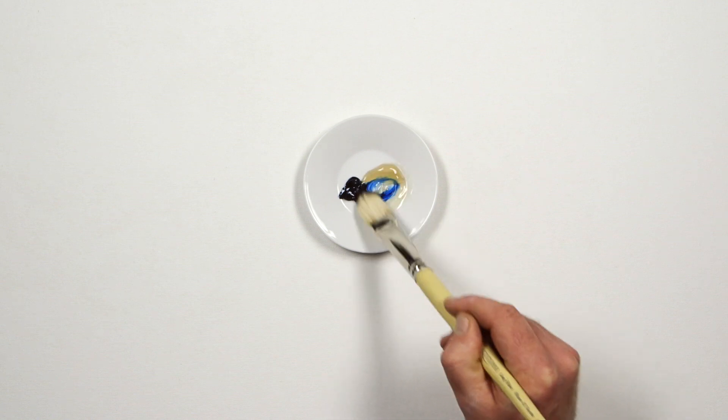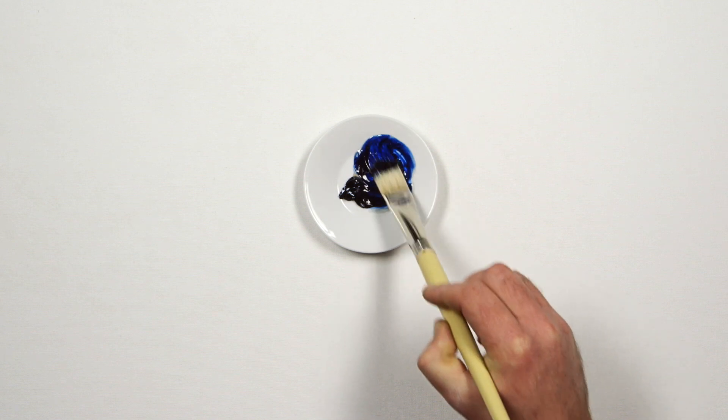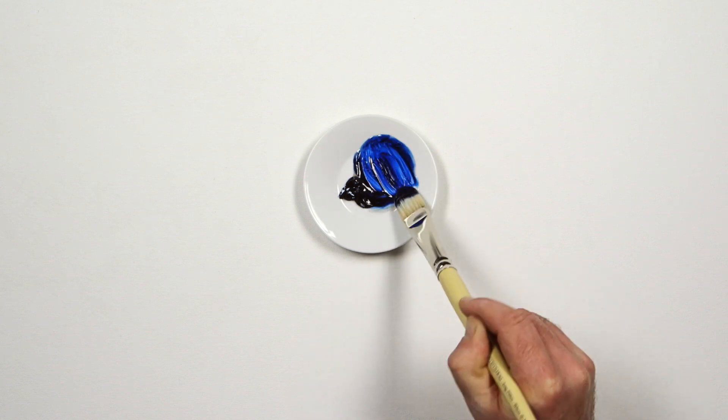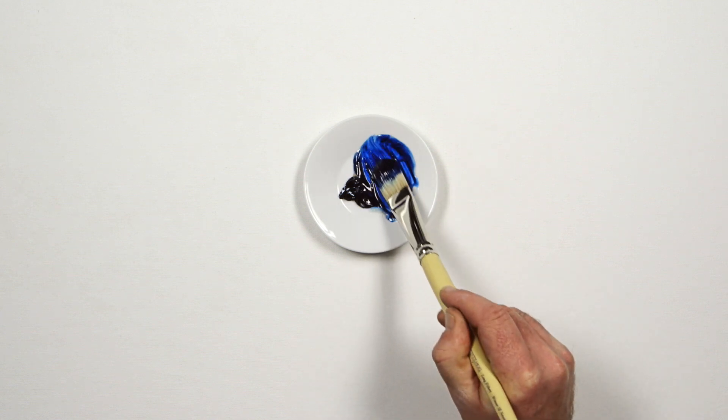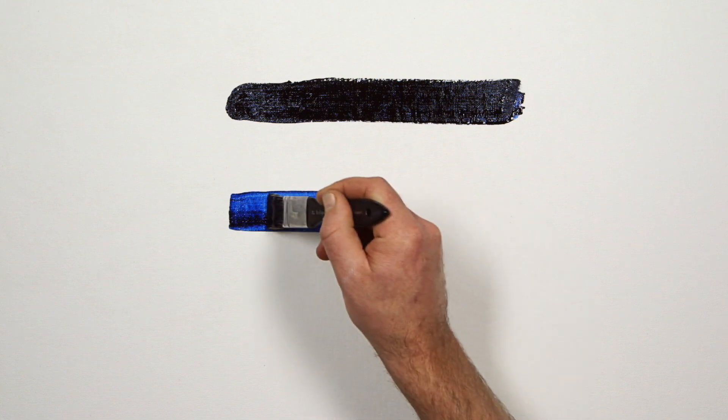Prussian blue has the highest light fastness rating and because of its transparency, it's very useful in glazing. Look when I add Liquin Original to Prussian blue, you'll see a stunning and intense blue glaze.